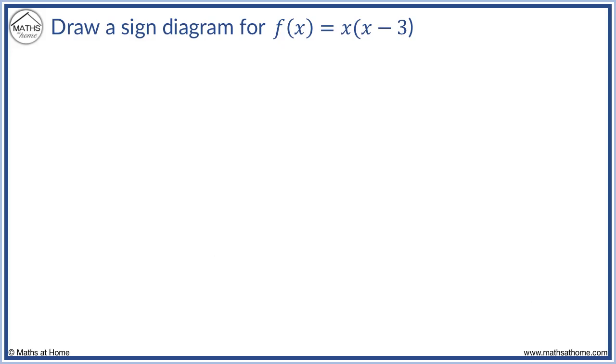Here is a similar function x brackets x minus 3. We first mark the points where the function equals 0. Either x equals 0 or x minus 3 equals 0. If x minus 3 equals 0, x equals 3.